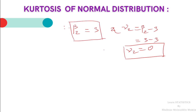If beta 2 equals 3, then the corresponding frequency distribution is a normally peaked frequency distribution, meaning a kurtosis of beta 2 equal to 3 is a mesokurtic distribution. Hence, the normal distribution is mesokurtic. Mesokurtic means that if we plot the PDF of normal distribution, the peak is neither too flat nor too peaked — it is in between platykurtic and leptokurtic.